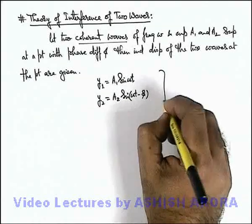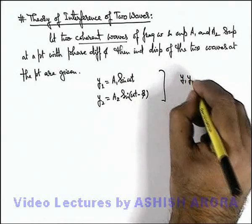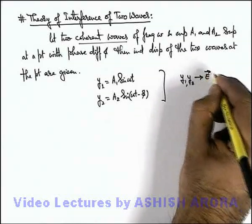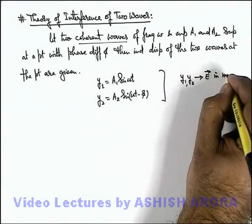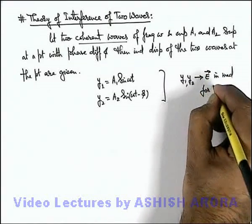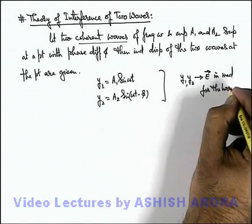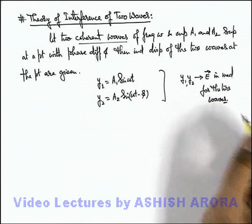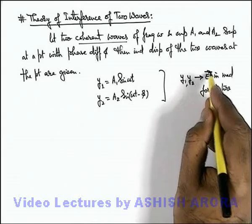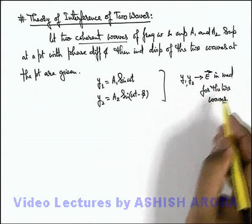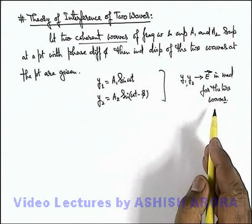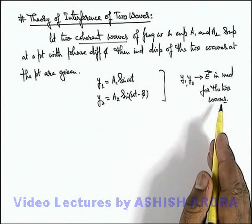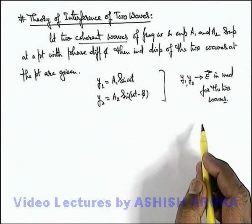For light waves, y1 and y2 both represent the electric field vector in the medium for the 2 waves, as we have discussed that oscillation of the electric field is basically responsible for all general phenomena or characteristics associated with light.